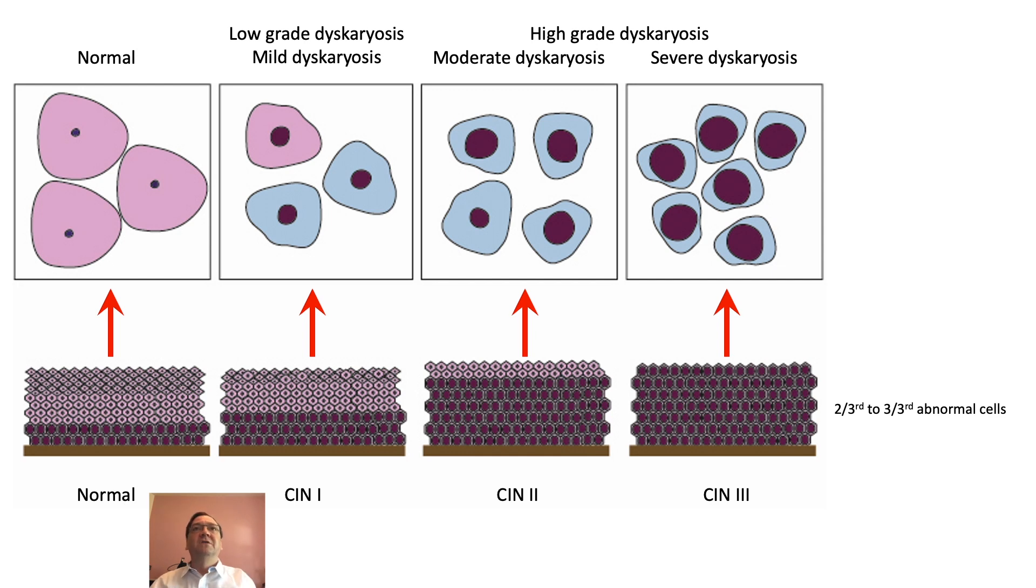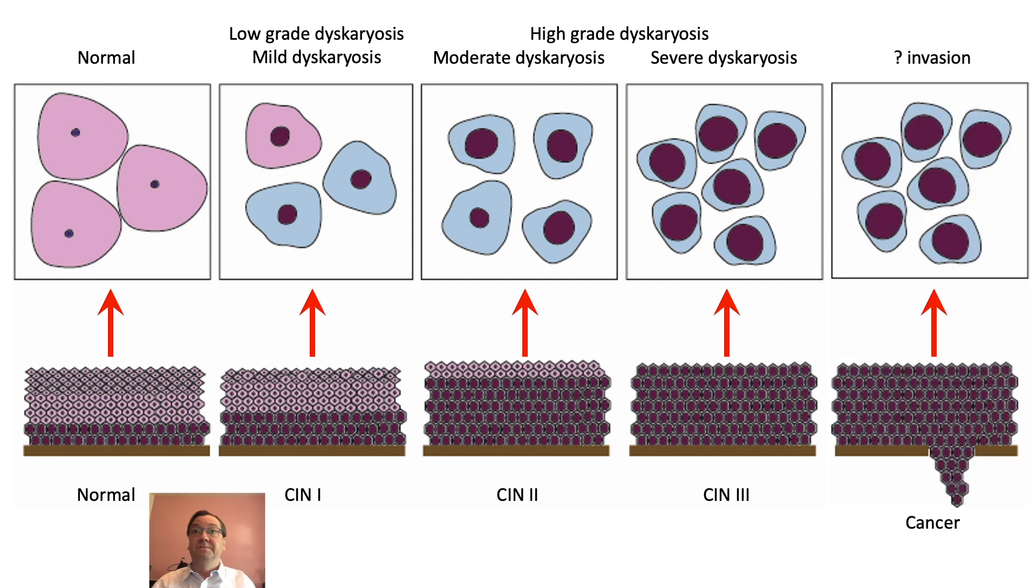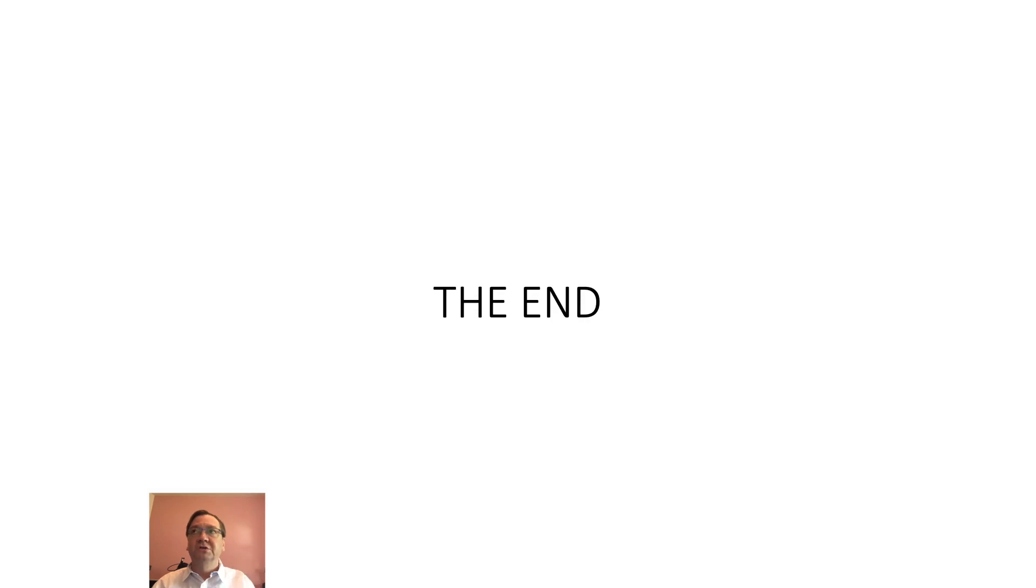Moderate dyskaryosis and severe dyskaryosis is often called high-grade dyskaryosis. Cancer is when the abnormal cells invade the basement membrane. So CIN and dyskaryosis are not cancer.